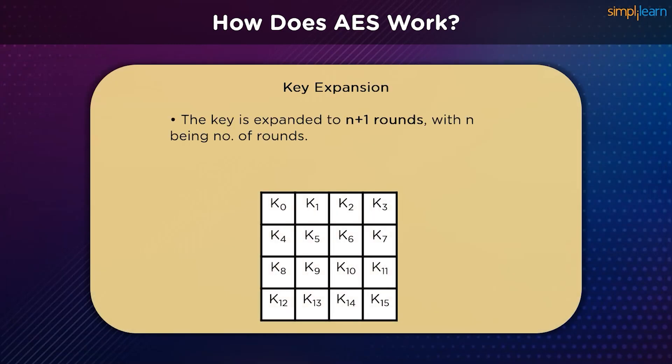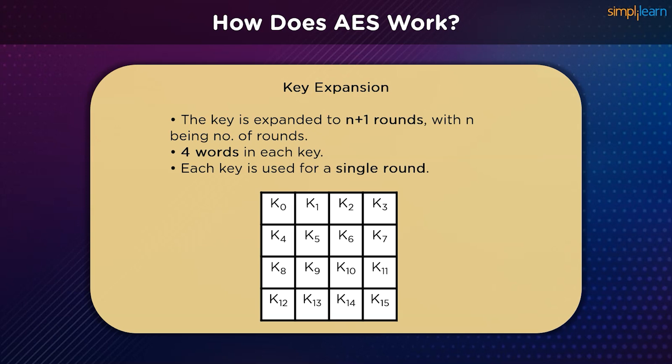We take a single key and expand it to the number of rounds needed. If the number of rounds is n, then the key must be expanded to n+1 rounds, because the first round is the key-zero round. The expanded key is also a state array having four words. Every key is used for a single round, and the first key is used as a round key before any round begins.